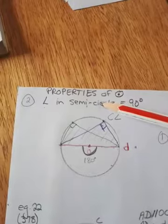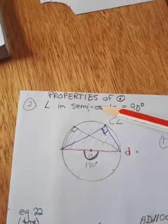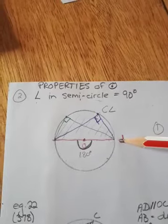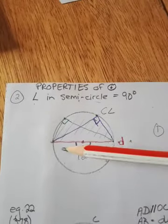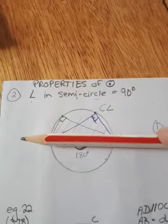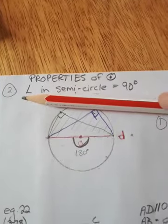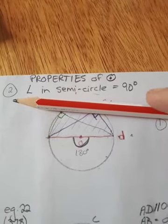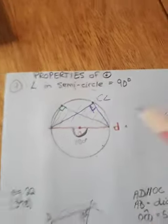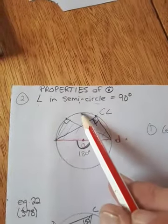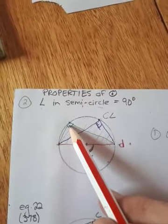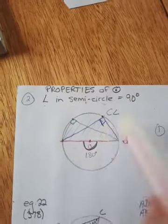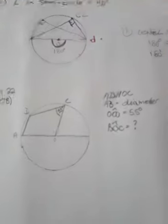You must first identify a semicircle. To identify a semicircle, you must have a diameter, and that divides the circle into two parts — each part is a semicircle. Then, if you have any angle inside the semicircle, that angle is 90 degrees. Let me do an example.